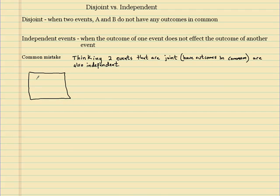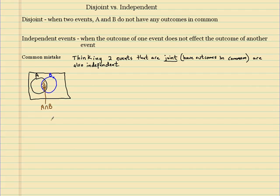We have a Venn diagram with two events that are joint — so they are connected. This is my A and this is my B. The area in the middle represents the outcomes that are in common, and we call this the set of A and B. So these are joint. Now let me give you some probabilities.